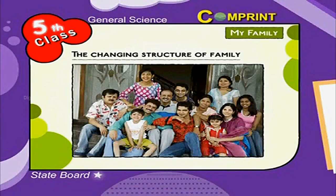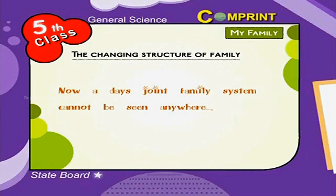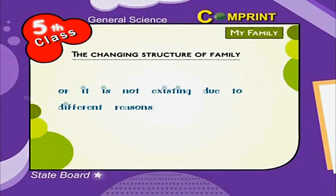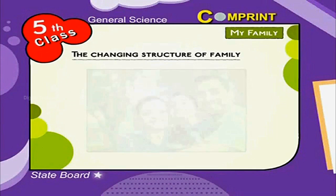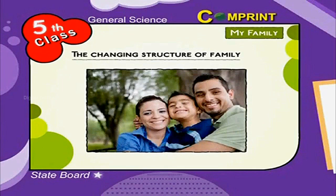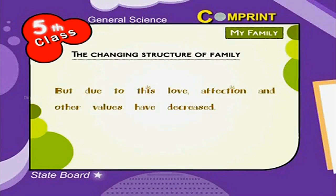In a joint family, all the family members live in the same house for all purposes. Nowadays, the joint family system cannot be seen anywhere, or it is not existing due to different reasons. Individual material benefits have increased among small families.